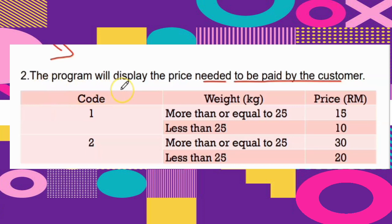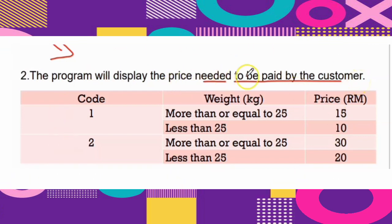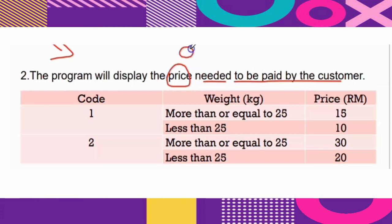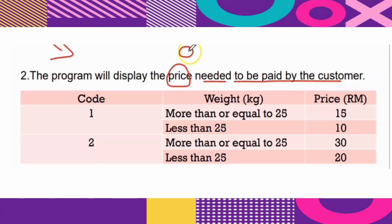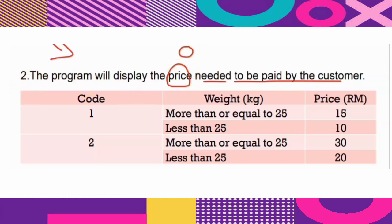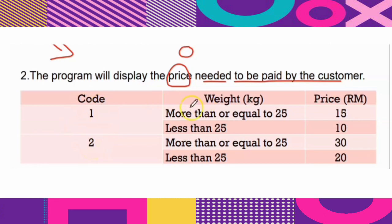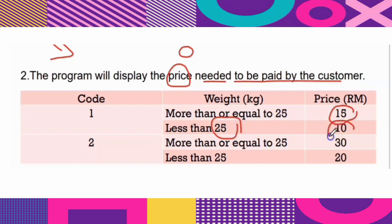For the second question, the program displays the price to be paid by the customer, so the output is price. Looking at the table: for quote 1, if the weight is greater than or equal to 25 kg the price is 15 ringgit; if less than 25 kg, the price is 10 ringgit. For quote 2, if weight is greater than or equal to 25 kg the price is 30 ringgit; if less than 25 kg the price is 20 ringgit.